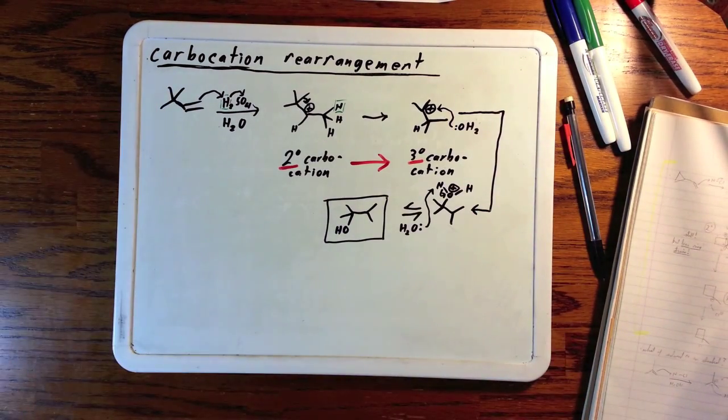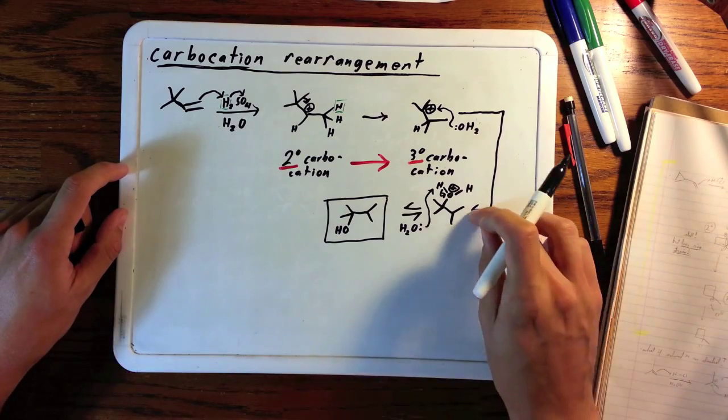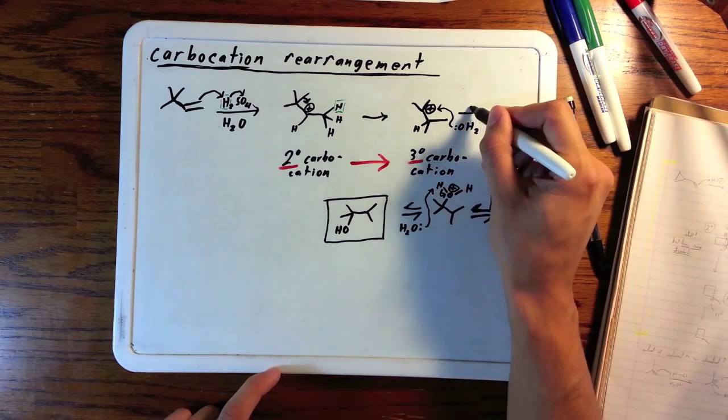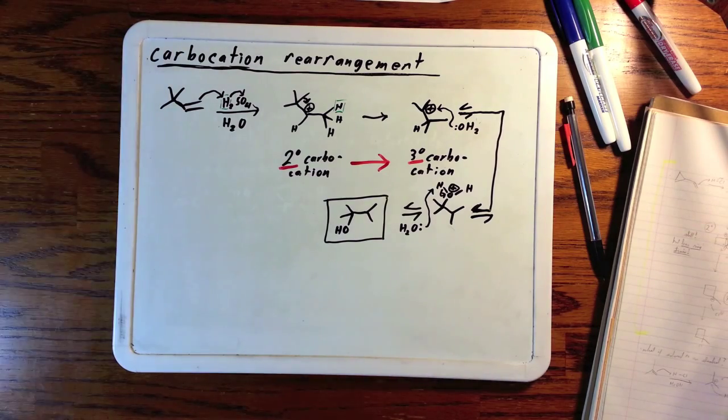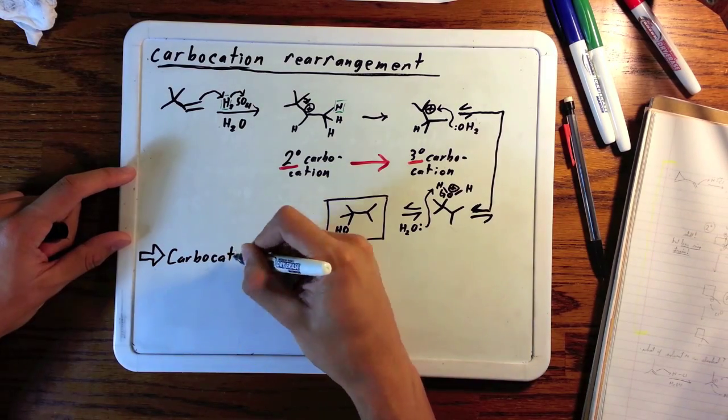That can pop off and go as far back to the tertiary carbocation. But starting material won't be reformed in significant amounts. The takeaway message from this is that carbocations will rearrange if and only if doing so will make them more stable.